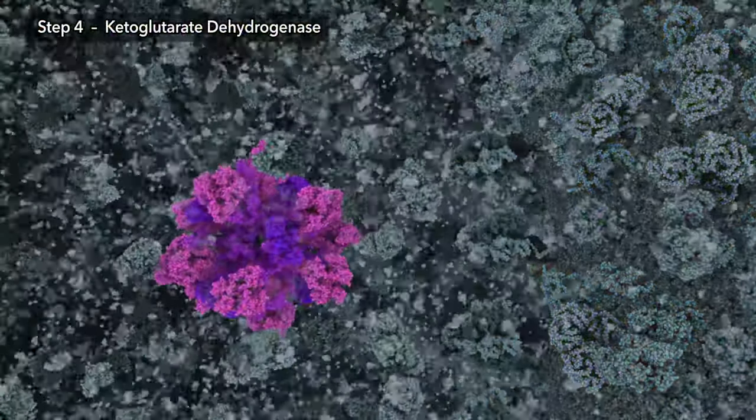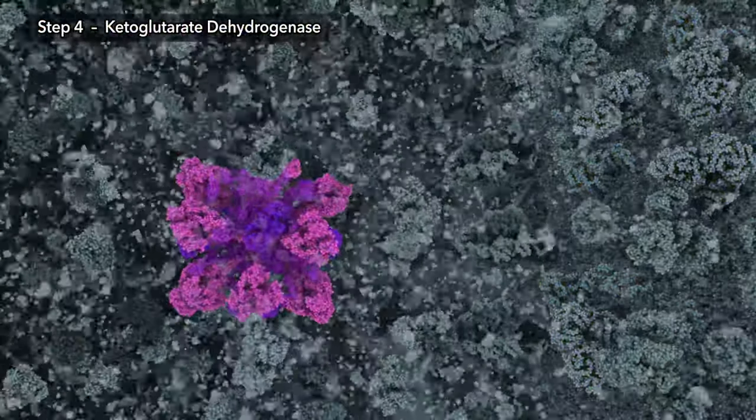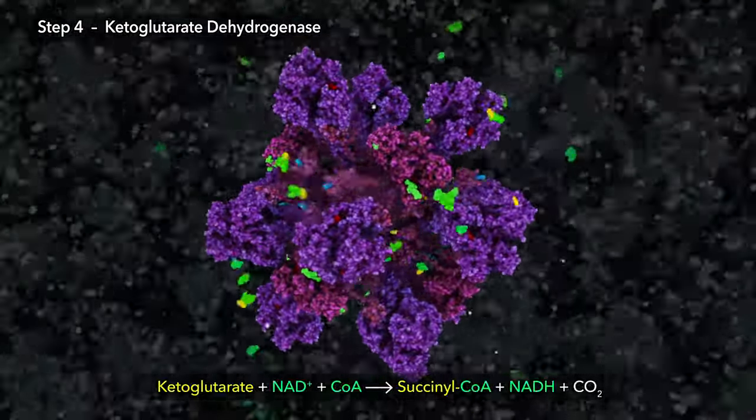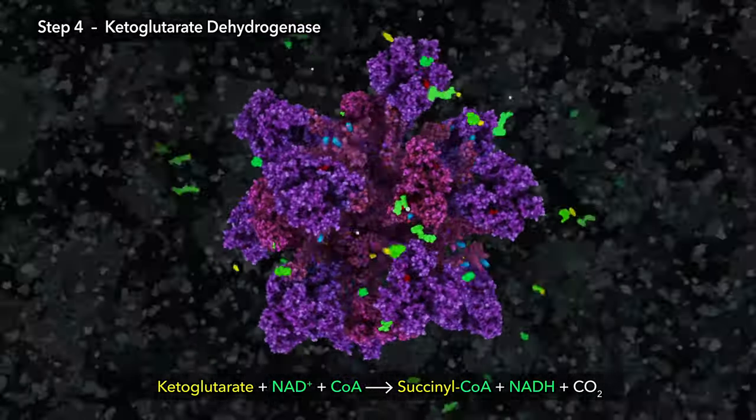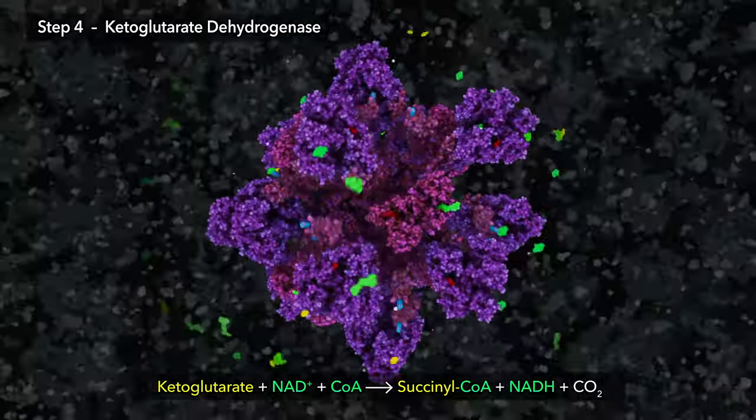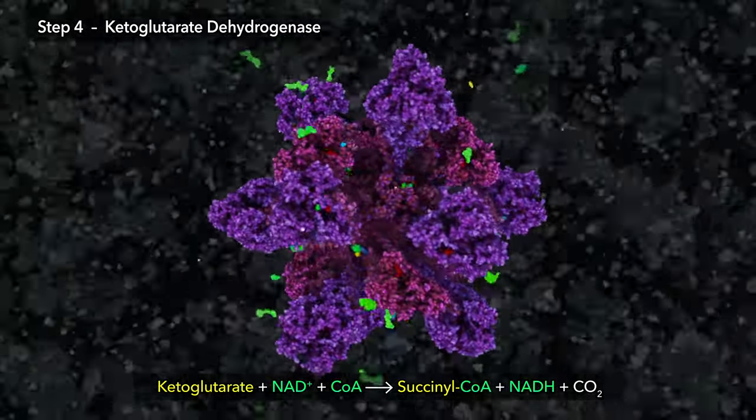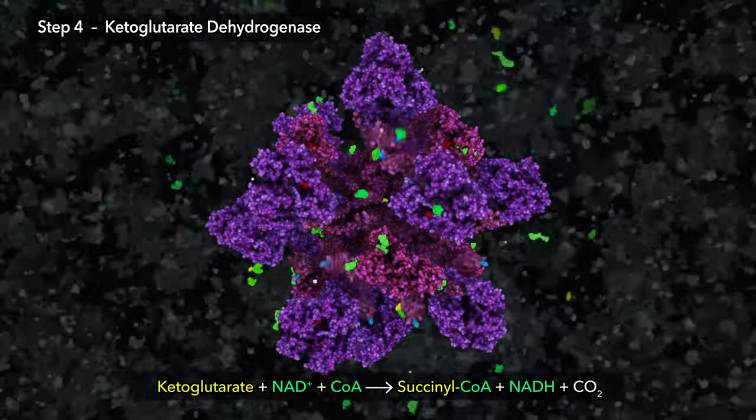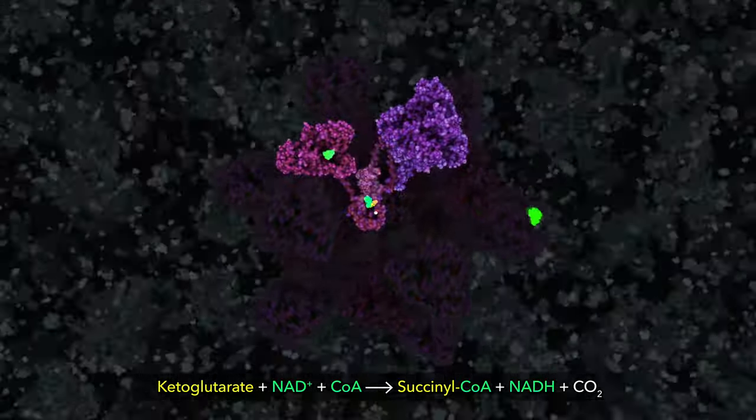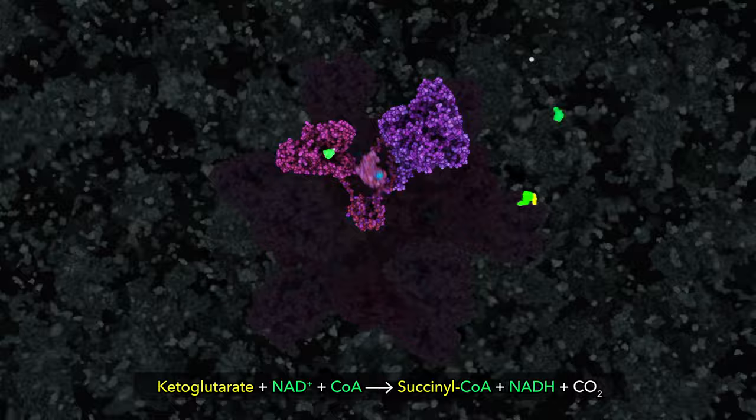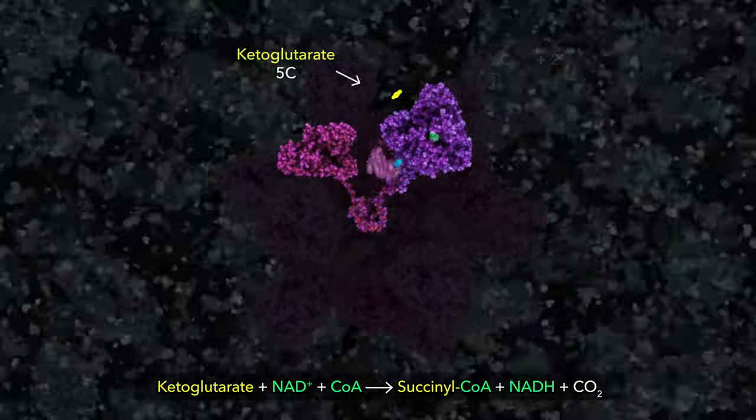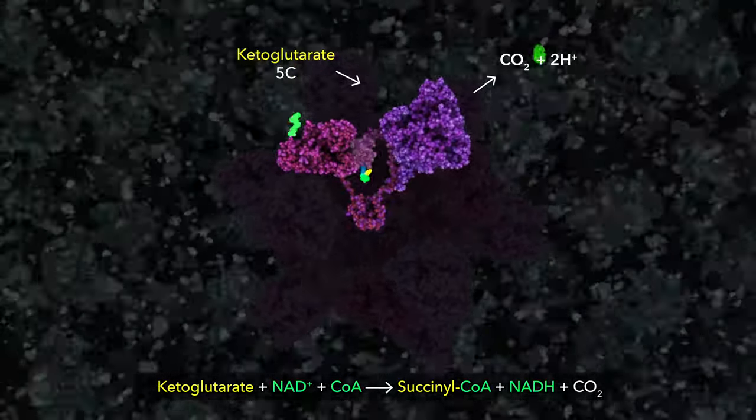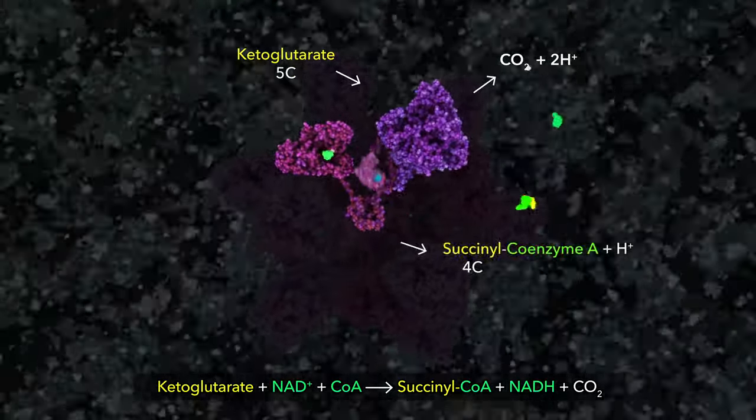Step four of the citric acid cycle is performed by a huge multi-enzyme complex, connecting multiple chemical reactions with flexible tethers, efficiently moving reactants between active sites, and diverting electrons between pathways. The large complex is made with a repeating unit of three core enzymes, working in sequence to remove a carbon atom from ketoglutarate, generating carbon dioxide waste, then attaching four-carbon succinyl to coenzyme A.